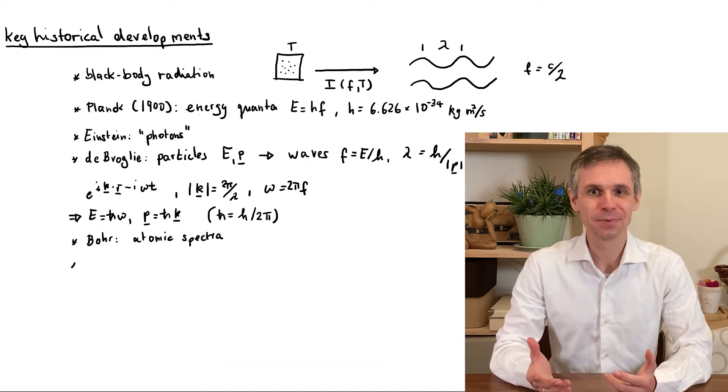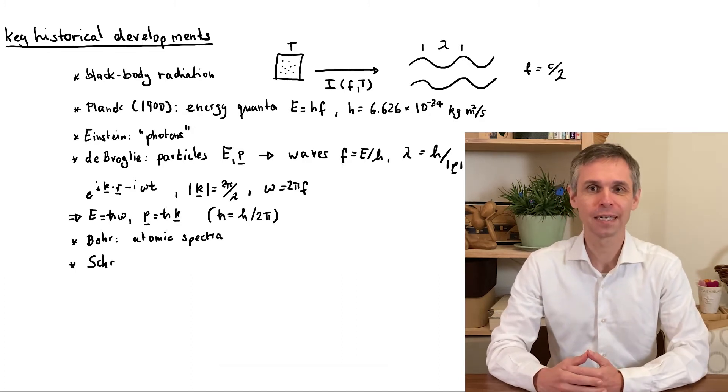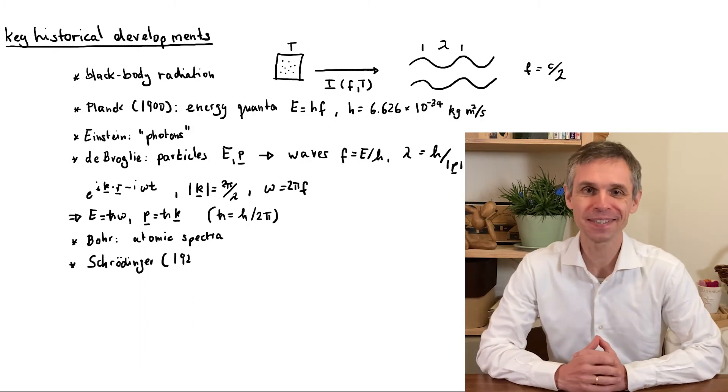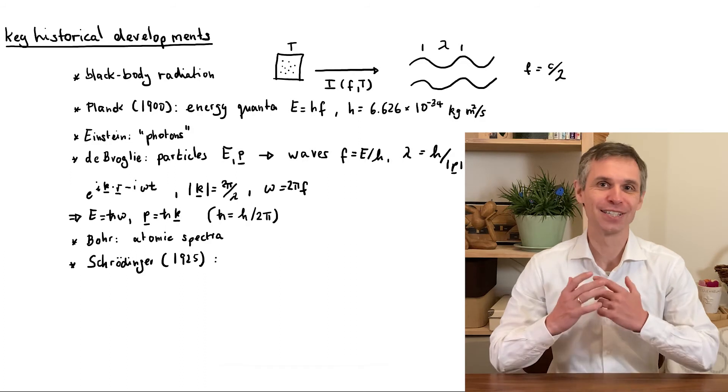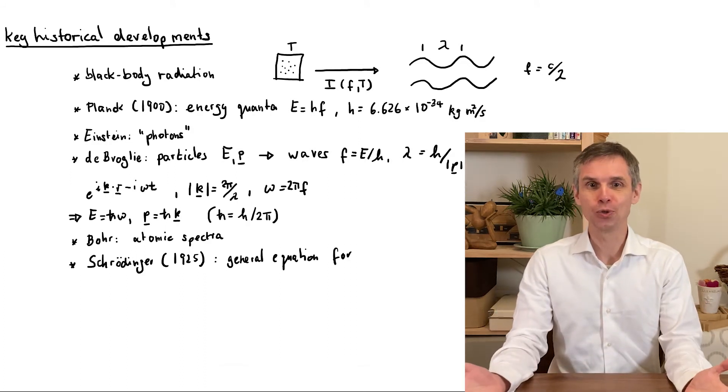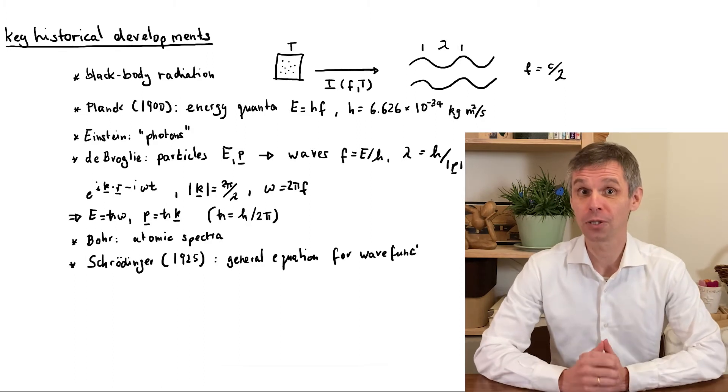However, it took until 1925 that Erwin Schrödinger came up with a general equation that tied all these aspects together into a consistent and general formalism, and he indeed applied it directly to derive the energy spectrum of the hydrogen atom.